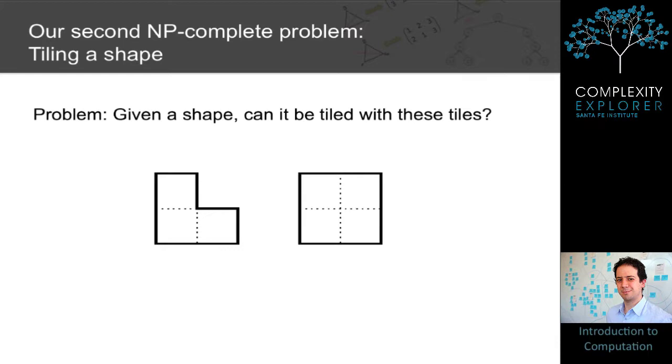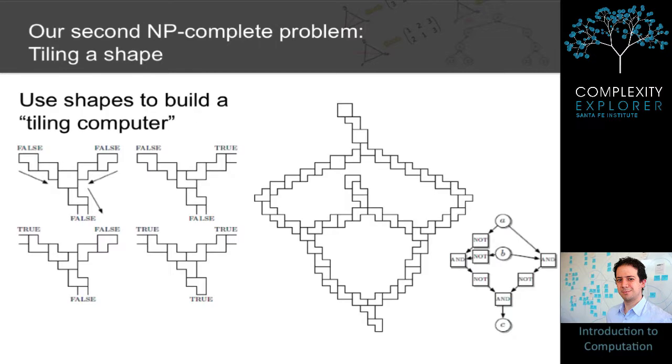The question is, I give you a shape built out of straight lines at right angles, and I ask, can it be tiled with these two tiles? Meaning, is there a way to place these two tiles in the shape so that the shape is entirely covered and no tile goes outside of the shape, and no two tiles overlap?